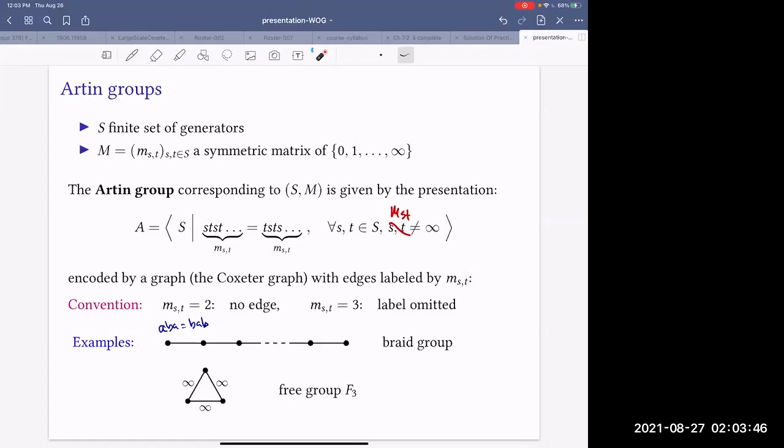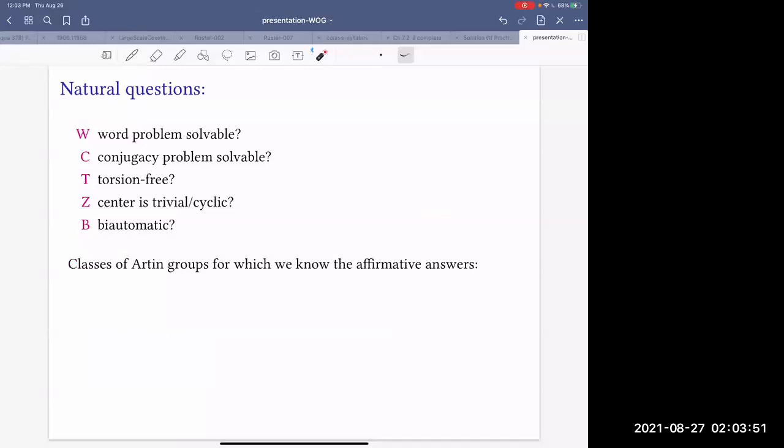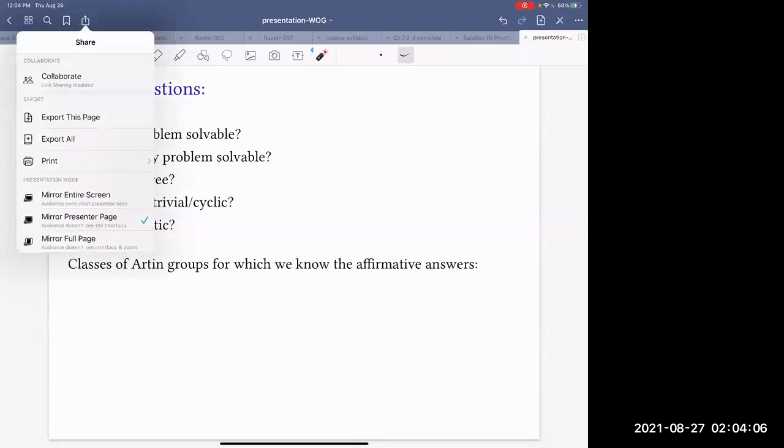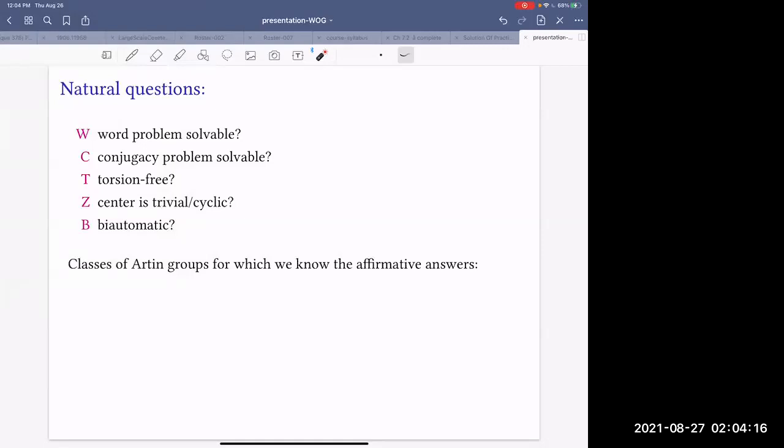Now we can ask some natural questions about these Artin groups. For example, is word problem solvable, is conjugacy problem solvable? Are they torsion-free? Is center trivial or cyclic? Is the group bi-automatic? For many, for some classes of Artin groups,